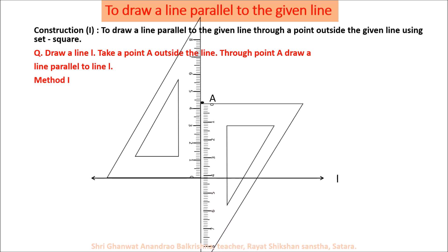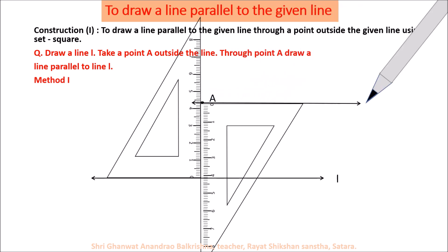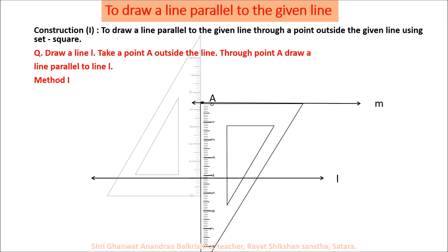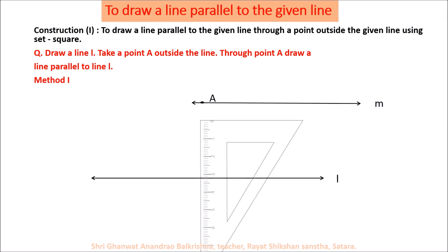Now move this set square up to point A. Draw a line passing through point A. Let us name this line M. So we can say that line M is parallel to line L through point A.